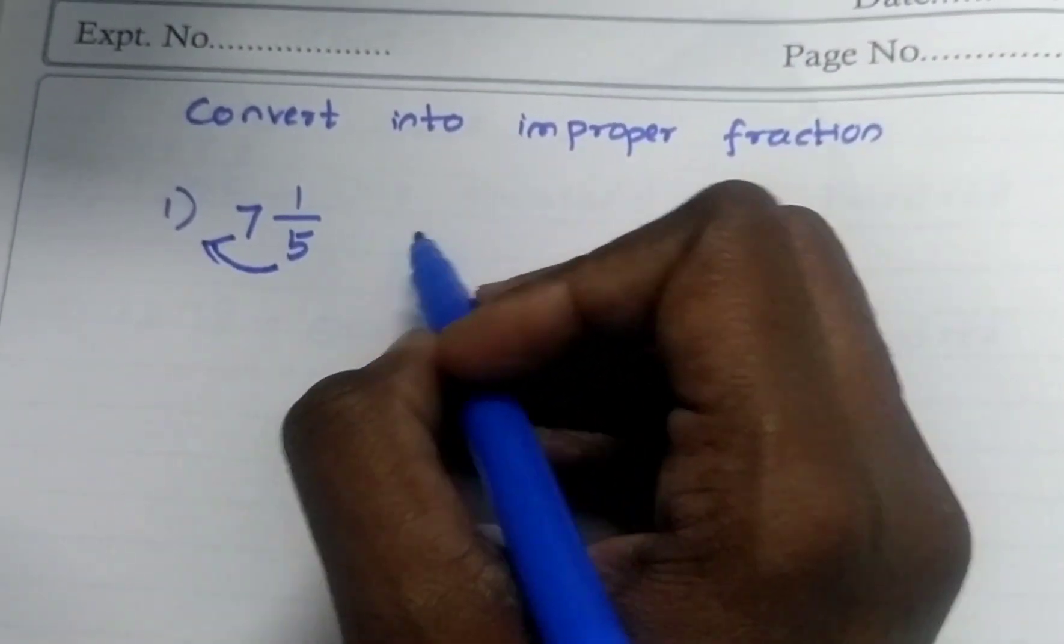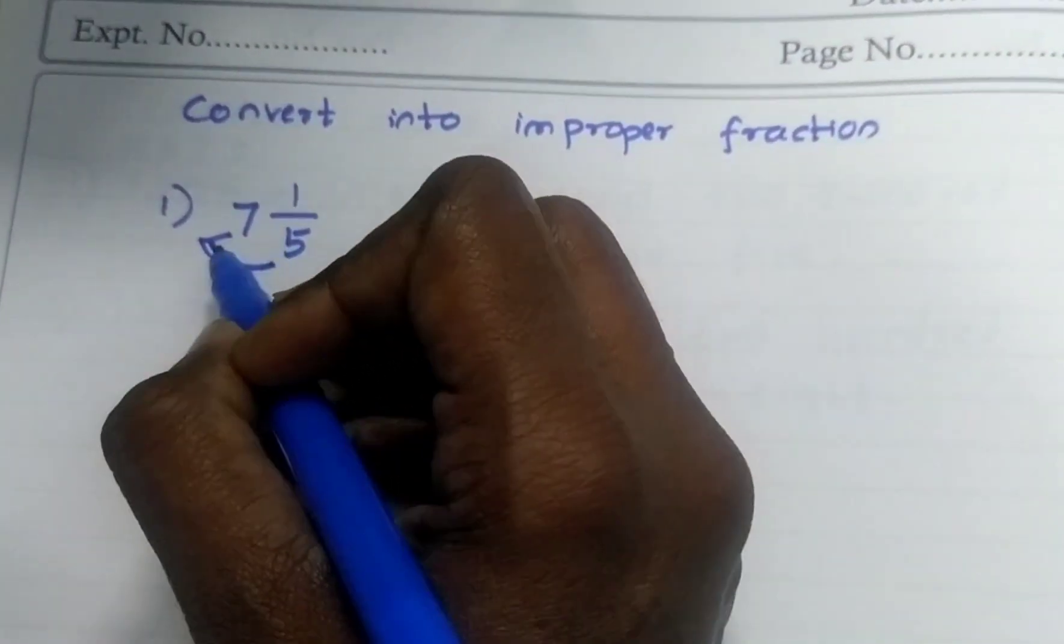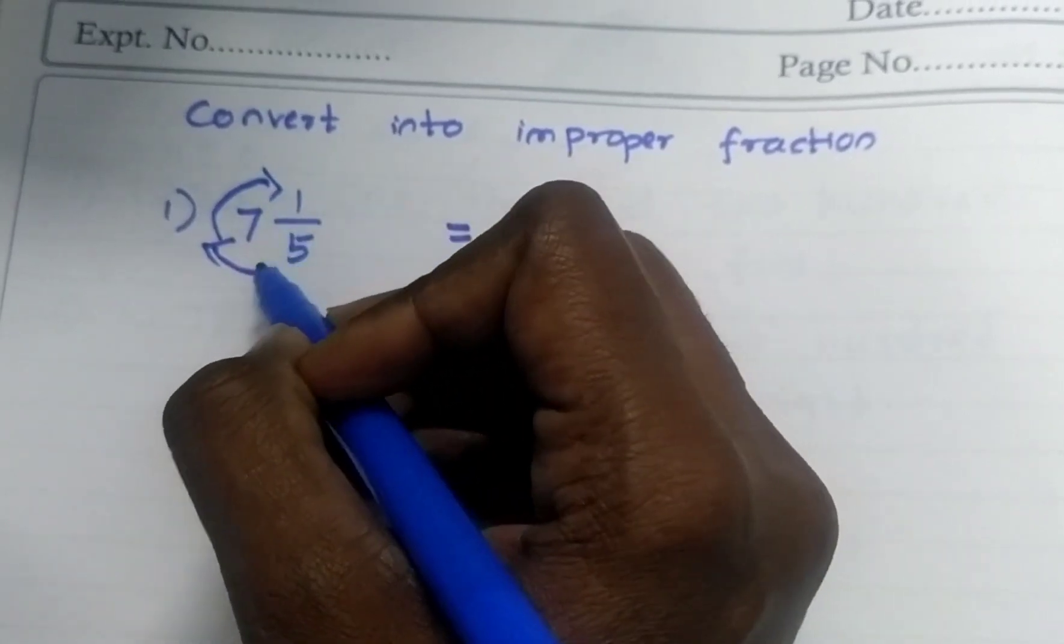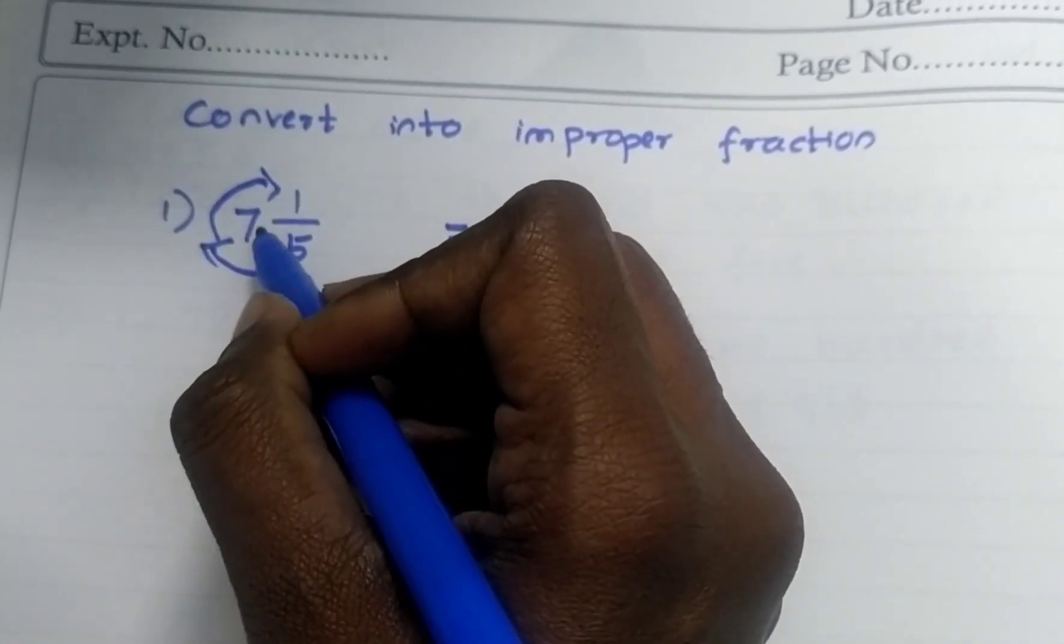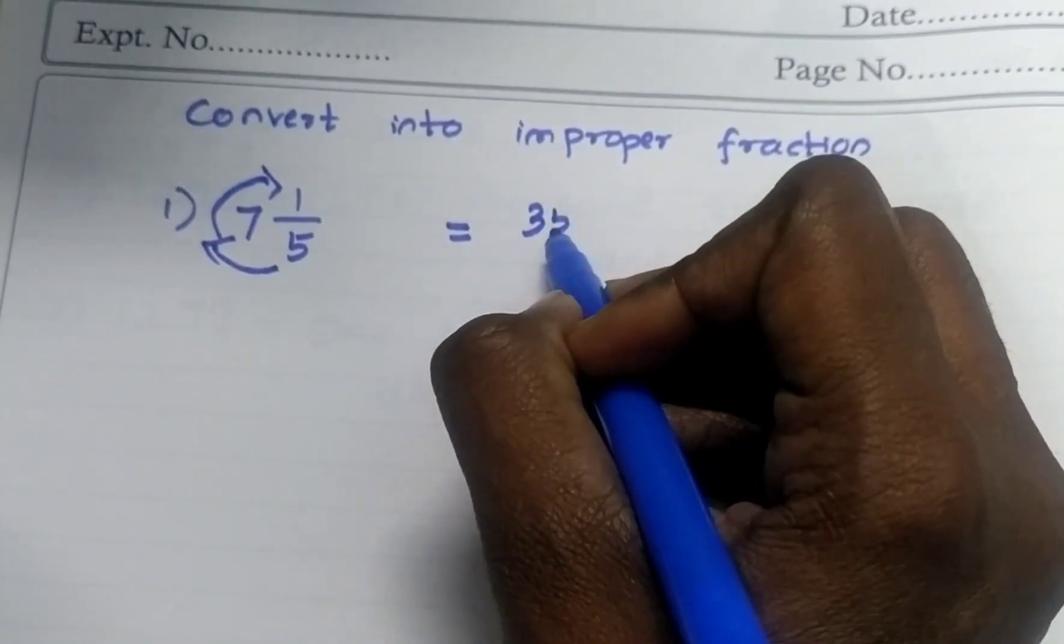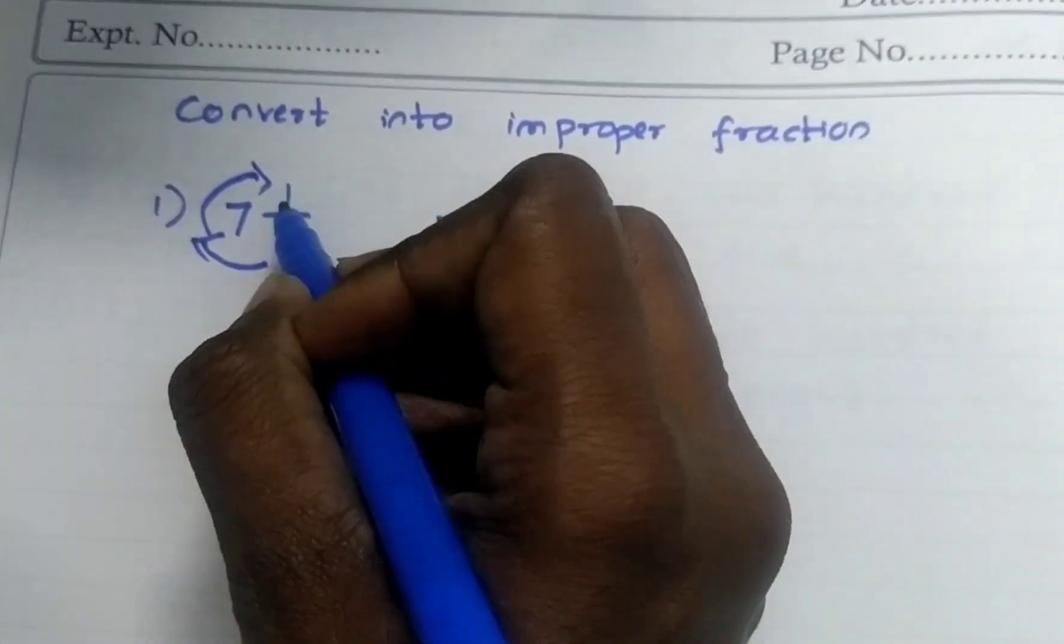So 7, 5's are 35. Then like this, that cycle will go left side only. 5 times 7 is 35. 35 plus 1. You have to add this number.